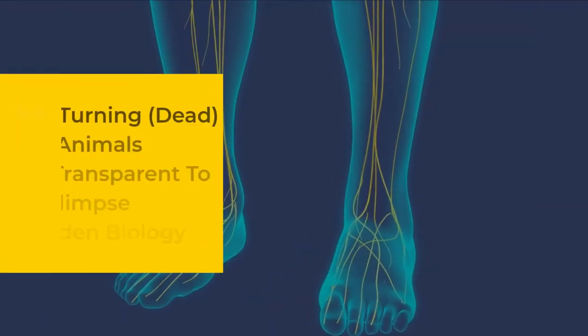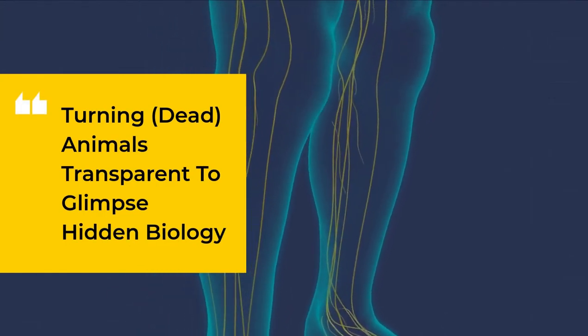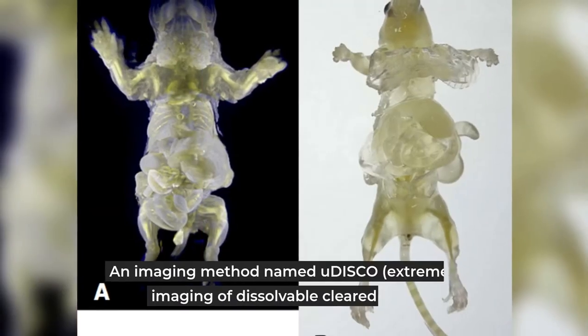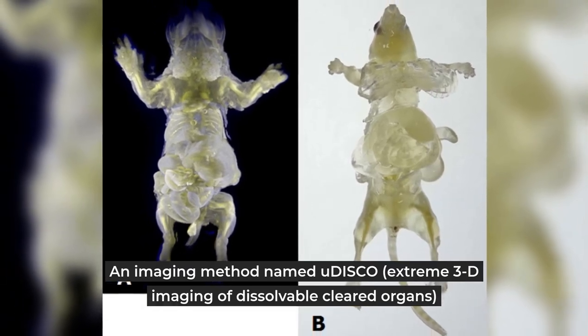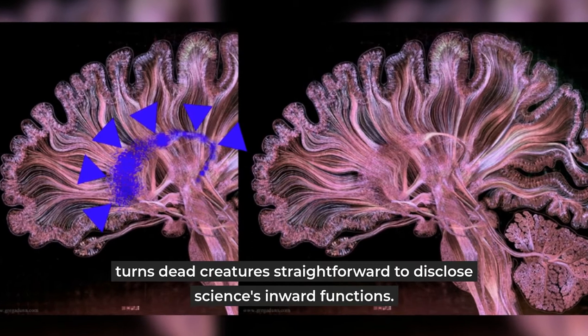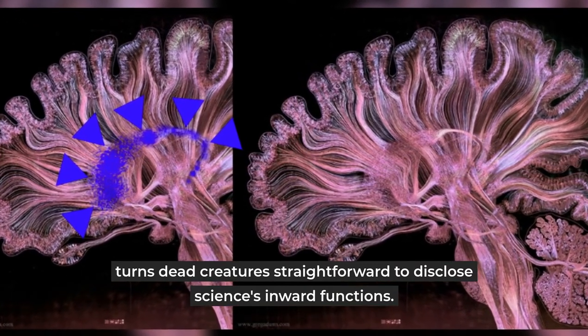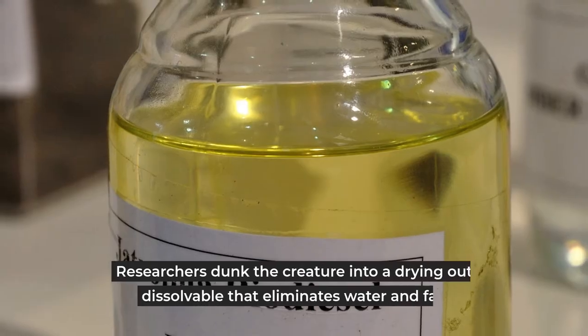7. Turning dead animals transparent to glimpse hidden biology. An imaging method named uDISCO, ultimate 3D imaging of solvent-cleared organs, turns dead creatures transparent to disclose biology's inner workings. Researchers dunk the creature into a dehydrating solvent that removes water and fat.